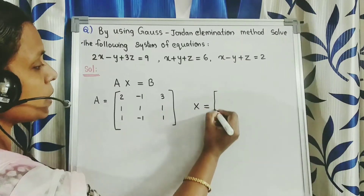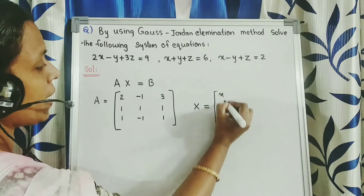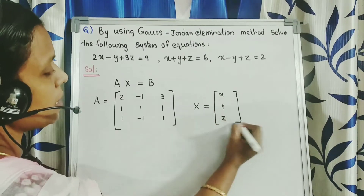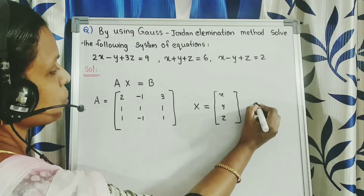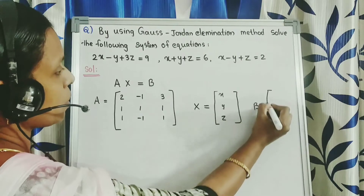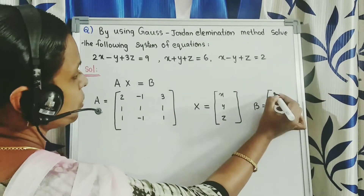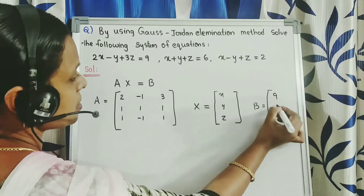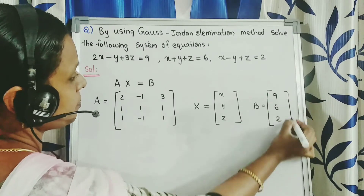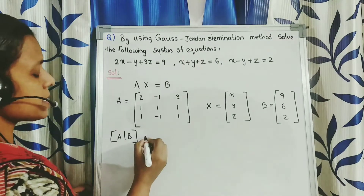X equals the variable vector X, Y, Z. B equals the constants vector 9, 6, 2. Next we write the augmented matrix.